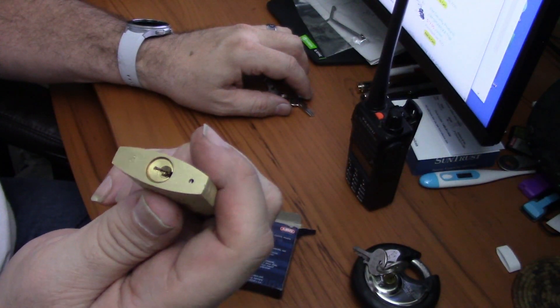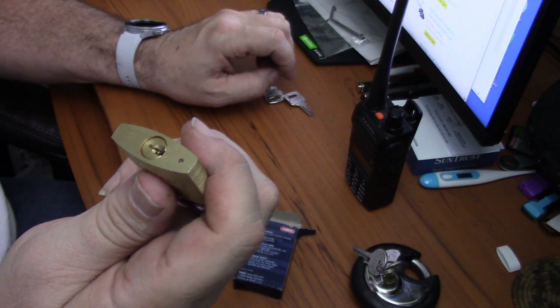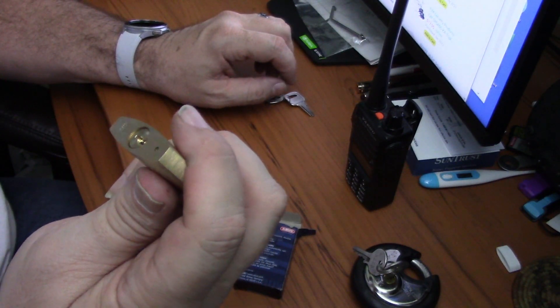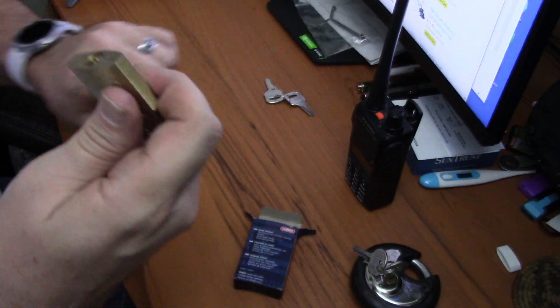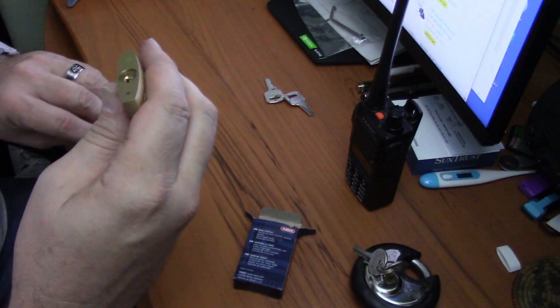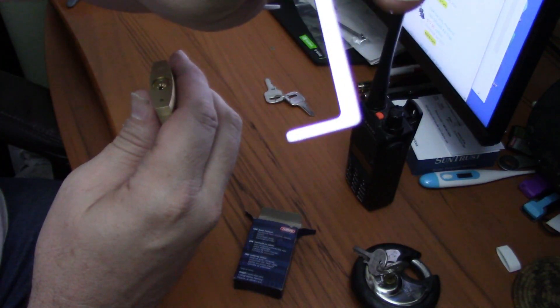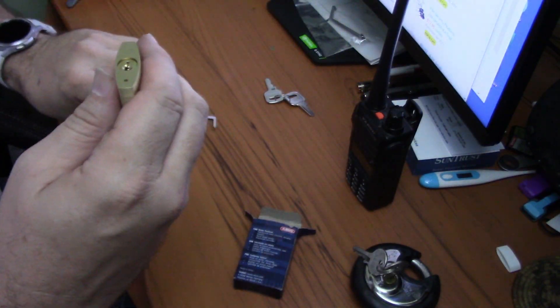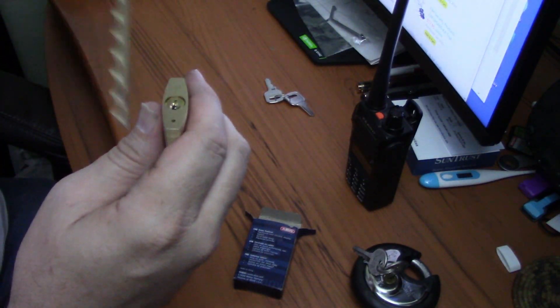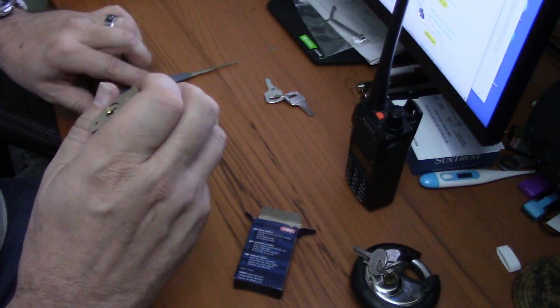I think I'm going to use everything stock right from the Banggood $24 pick set. I'm going to use the really thin tension bar and my trusty rake/rocker. It seems to work pretty good lately for me.